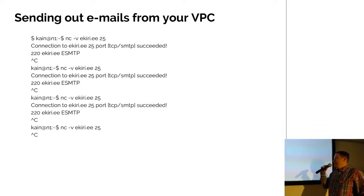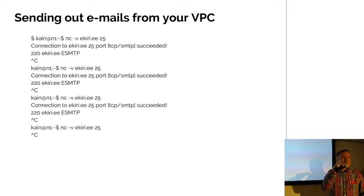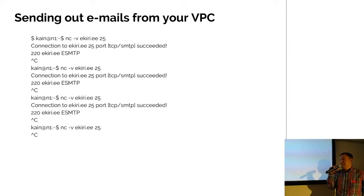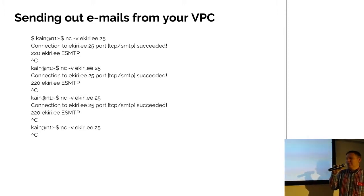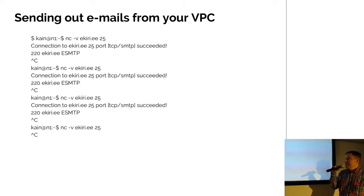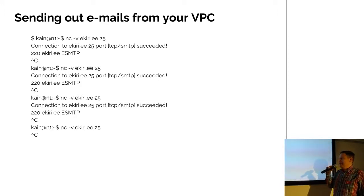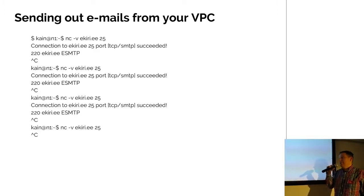You probably know that you can't send out emails from the cloud, because if you could, all the spammers in the world would use it. When you launch new EC2 machines with public IPs, those IPs come from AWS's IP pool, and AWS wants to protect this pool from being blacklisted. As shown in this slide, after I made three attempts to connect to port 25, AWS blocked my request.